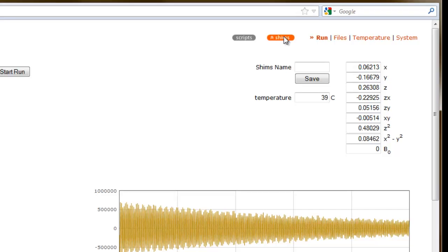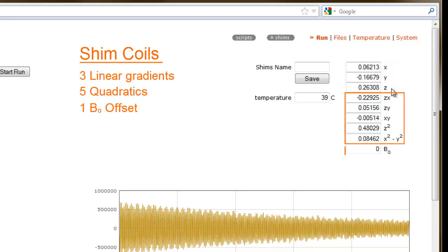The parameters on the right-hand side are normalized shim coil current values. The picospin capillary cartridge has nine shim coils: three linear gradient coils, five quadratic coils, and a B0 offset field.